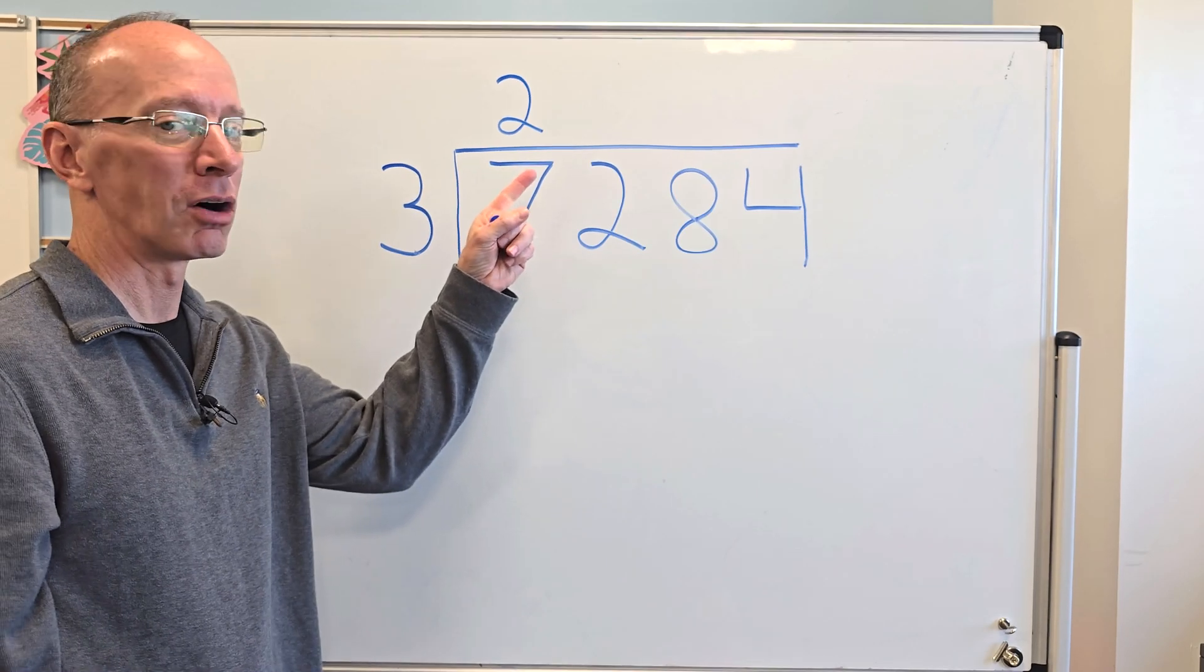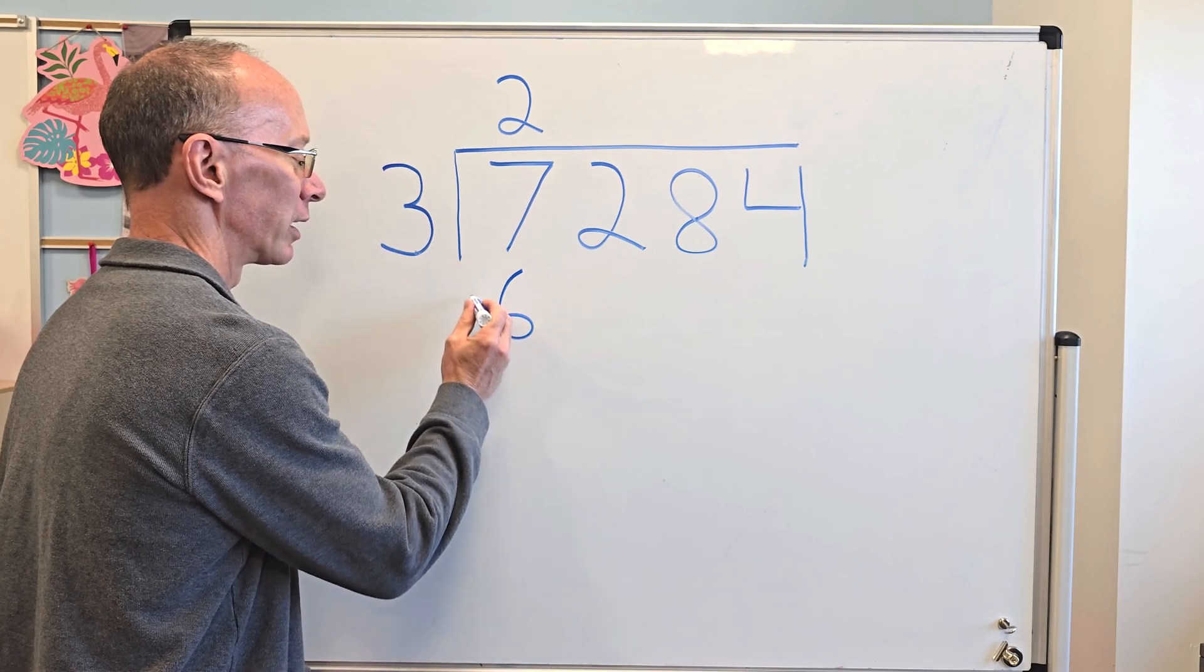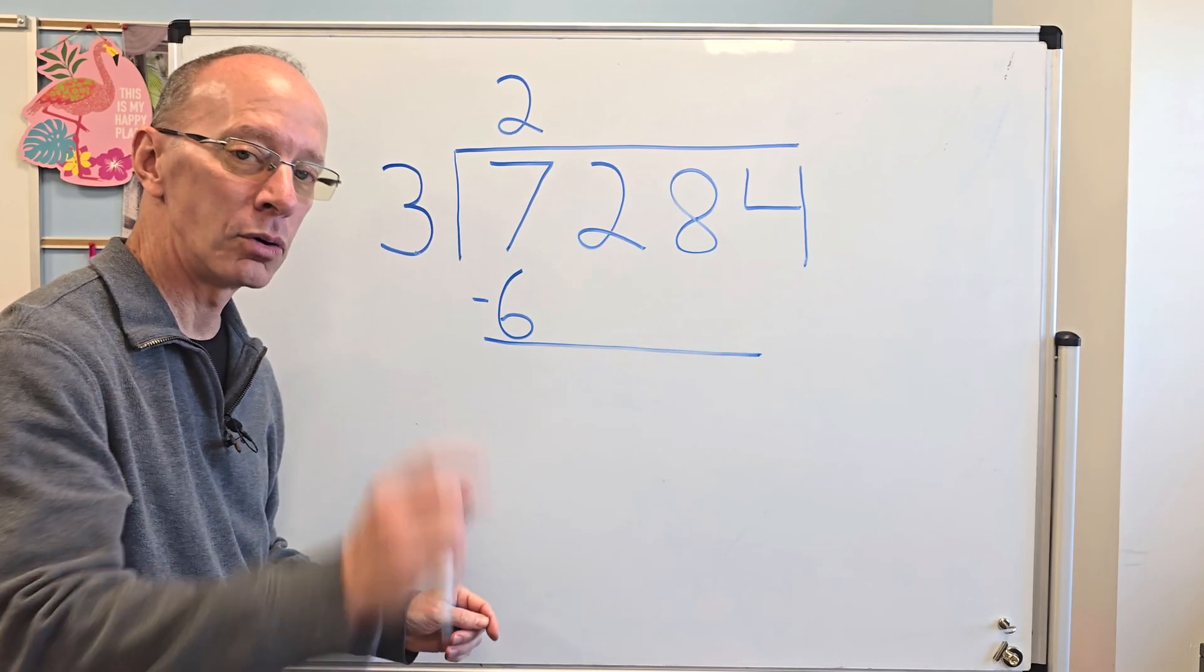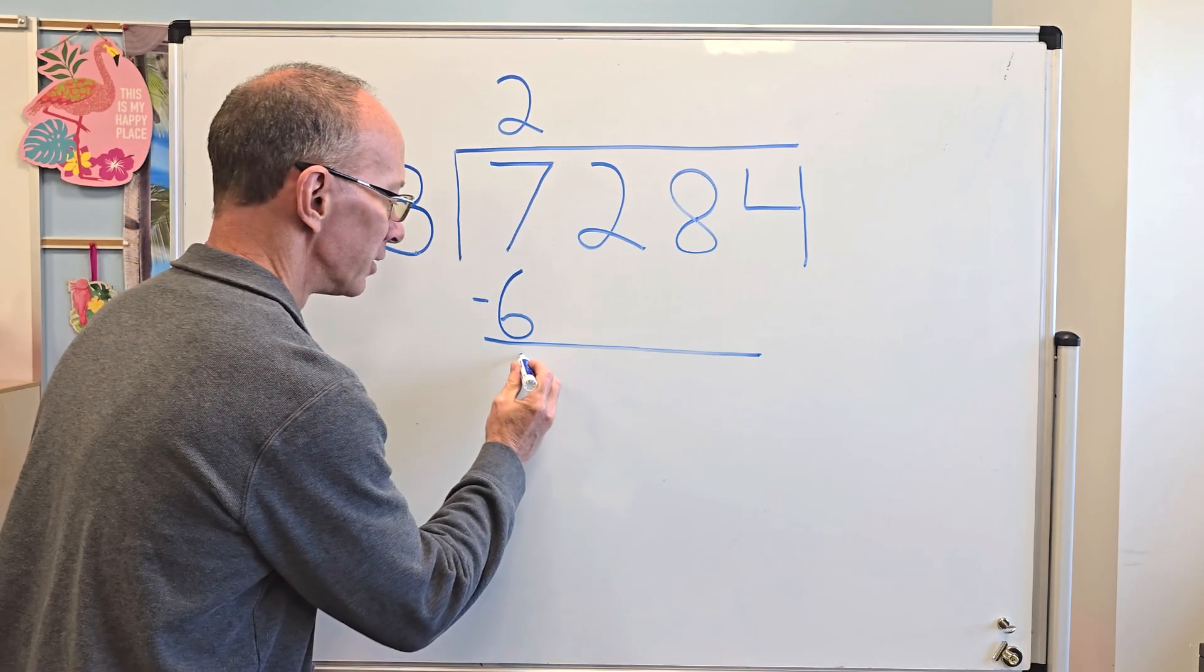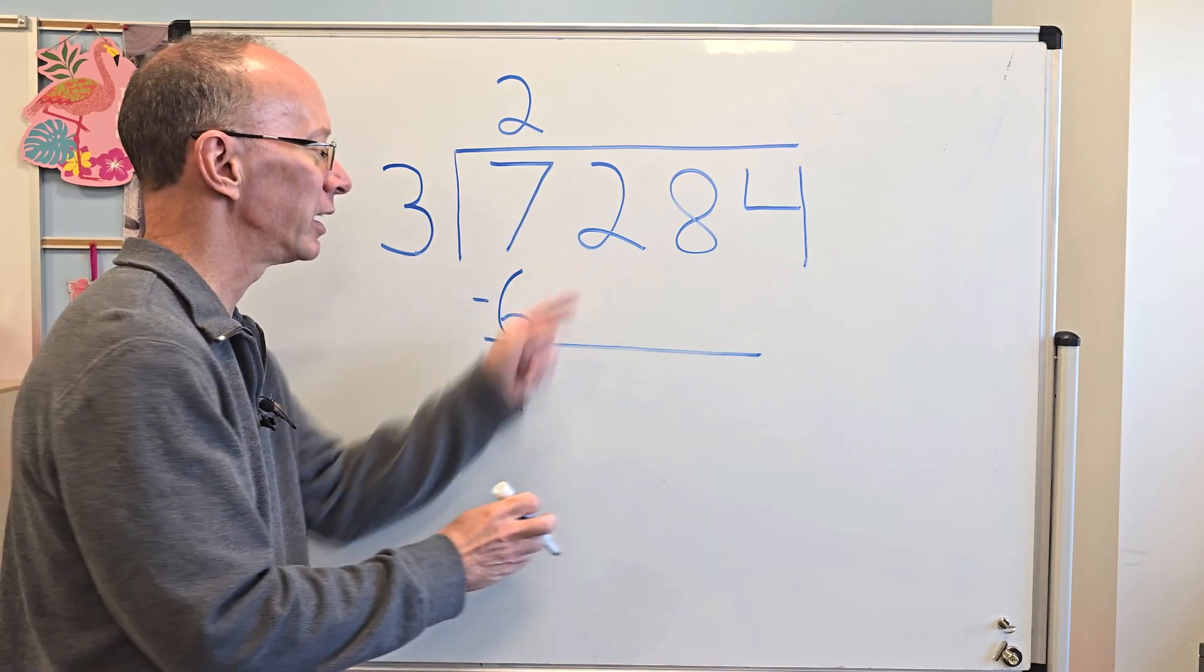And now we're going to be subtracting. So 7 minus 6 equals 1. Put 1 here, and now the next step is you drop the next number down right here.